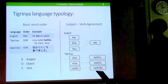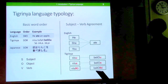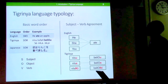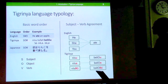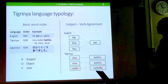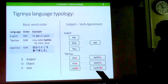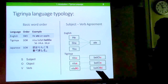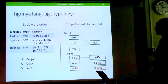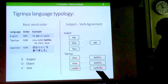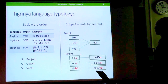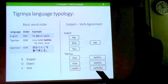The basic word order in Tigrinya is SOV — the verb comes at the end of the sentence, similar to Japanese. In Tigrinya, subject-verb agreement is enforced by inflection of the pronoun system and the verb system. As we can see, English is weakly inflected, but Tigrinya is a highly inflected language.